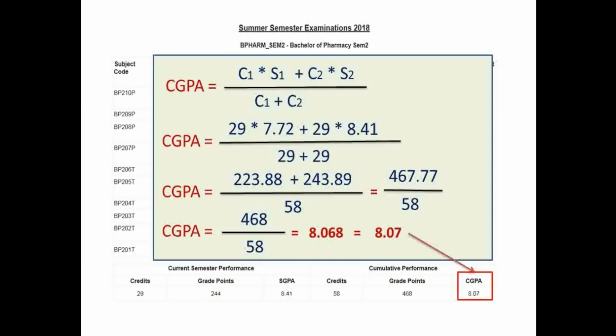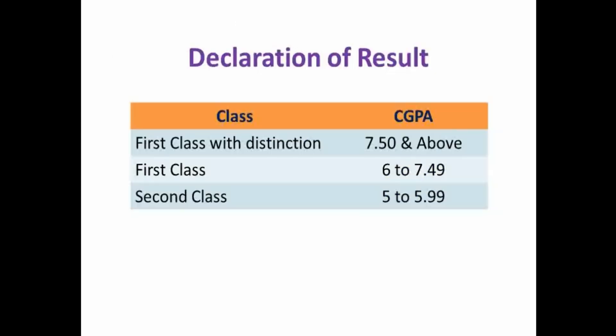Depending upon the value of cumulative grade point average achieved by the student, the class is decided. Here you can see the declaration of result. If the CGPA grade points are 7.5 and above, then the student receives first class with distinction. If the CGPA grade points are between 6 to 7.49, then it is first class. If the grade points are 5 to 5.99, then it will be considered as second class.